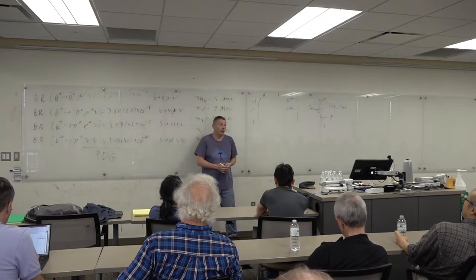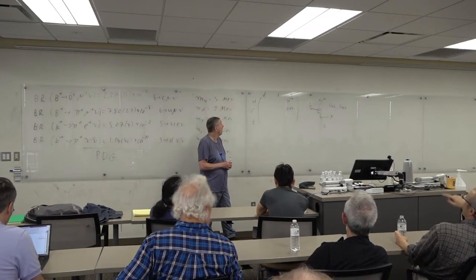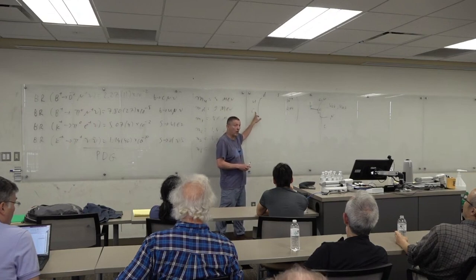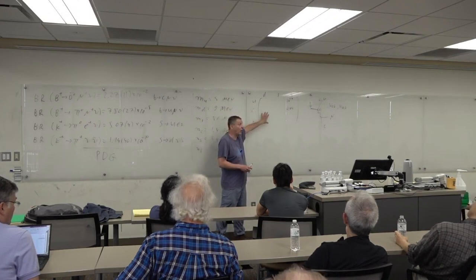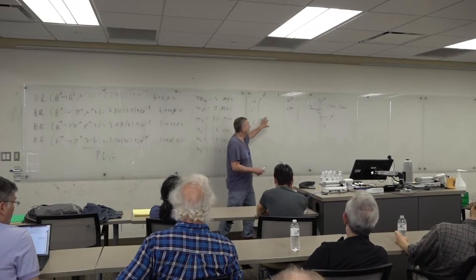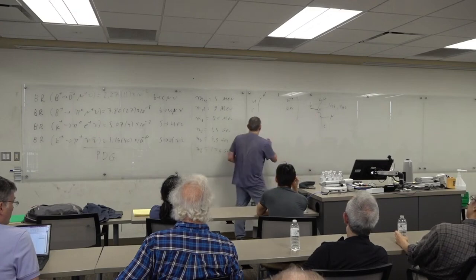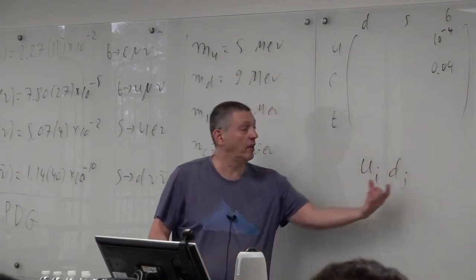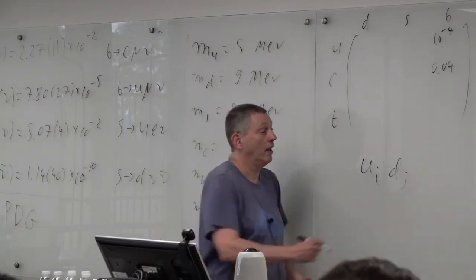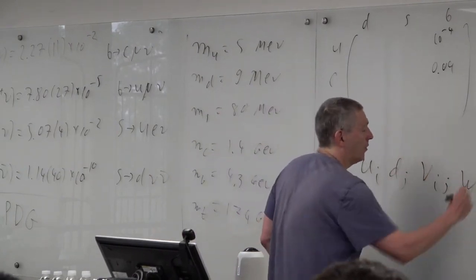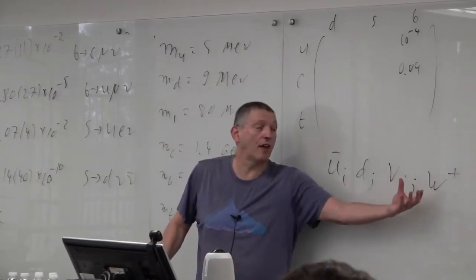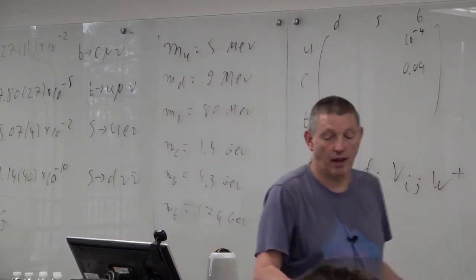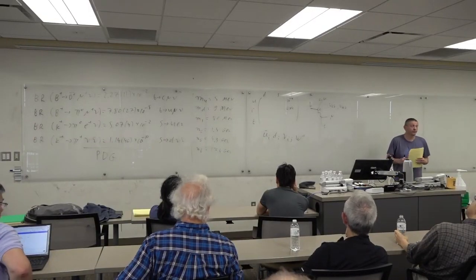Another question: is there a process that turns u into c? A u going into c is a flavor change with no charge change — a flavor-changing neutral current — and therefore you cannot have it at tree level. This matrix only allows transitions that change charge, coupling always to the W. To go from u to c you need to insert the W vertex twice, making it a one-loop process that is highly suppressed.